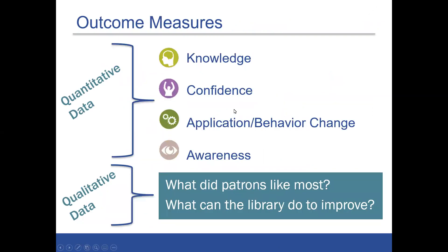All of the surveys are based around measuring four key learning outcomes: knowledge, confidence, application or behavior change, and awareness. All of them also contain two open-ended questions asking what patrons like the most and what the library can do to improve. The language for each survey varies depending on the particular topic.